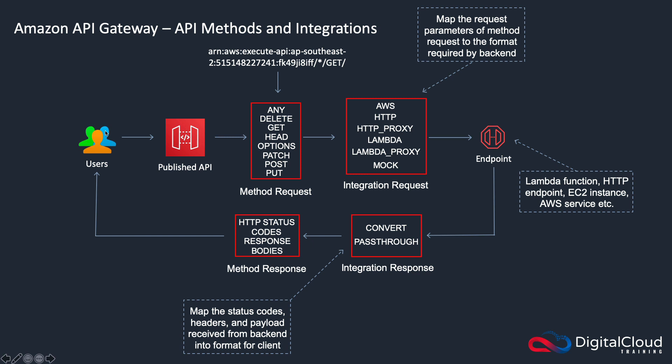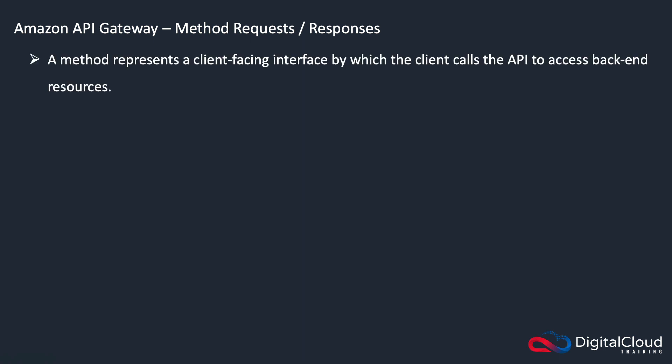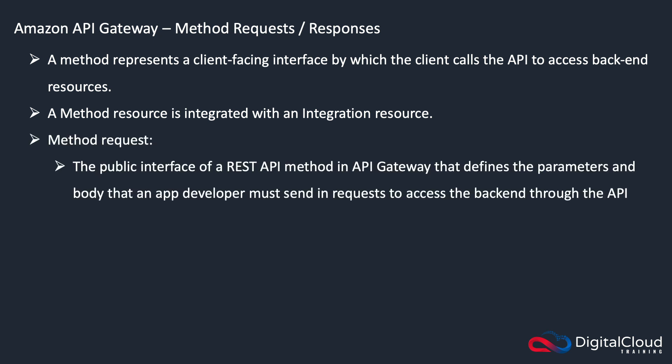Then it's actually returned to the client. It's quite complicated, but you don't really need to know a huge amount of detail about how to do things like mapping status codes, headers, or transforming data. A method represents the client-facing interface by which the client calls the API to access the backend resources. The method resource then gets integrated with an integration resource. A method request is the public interface of a REST API method in API gateway, and it defines the parameters and body that a developer must send in requests to access the backend through the API.